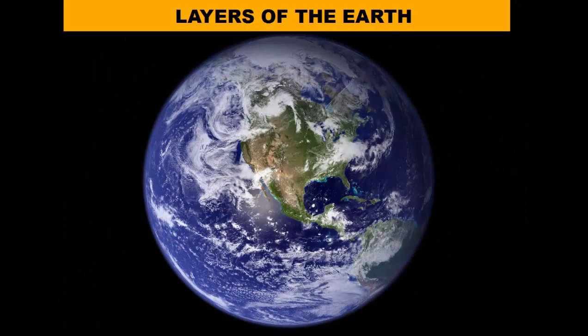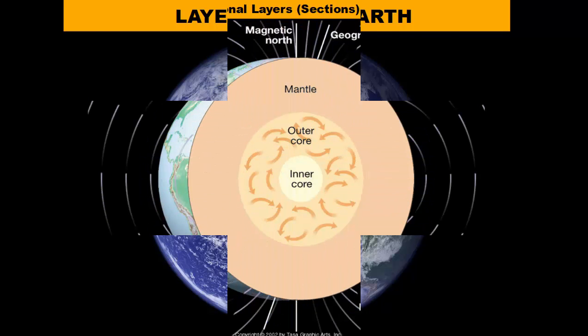Hi everybody, welcome to our lesson on the layers of the earth. In this lesson, we will talk about the three compositional layers of the earth called the crust, mantle, and the core, and then we'll discuss the five physical layers of the earth: the lithosphere, asthenosphere, mesosphere, outer core, and inner core. So let's get started.